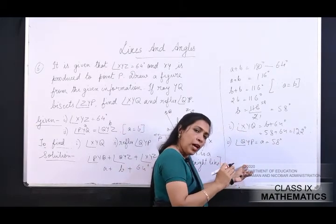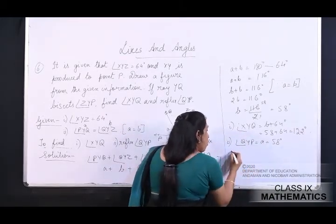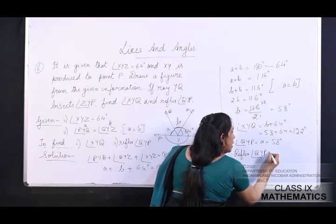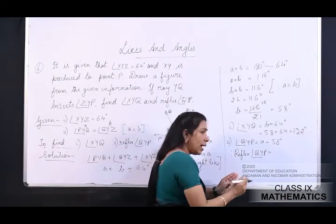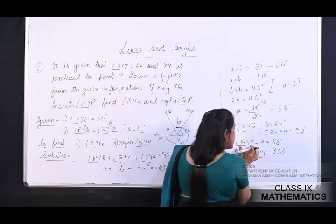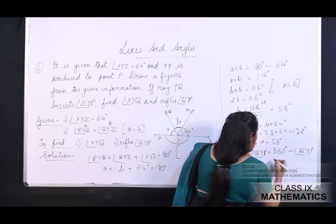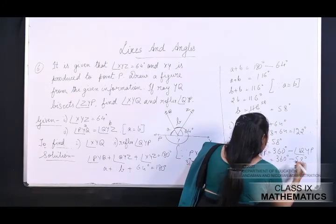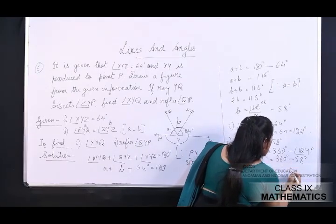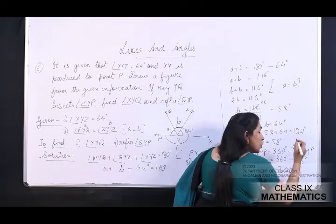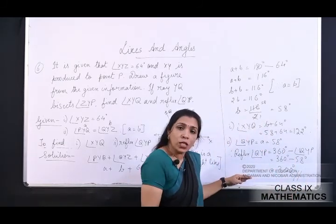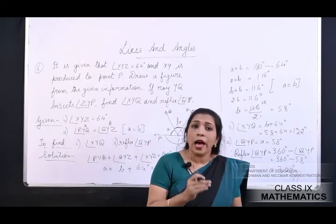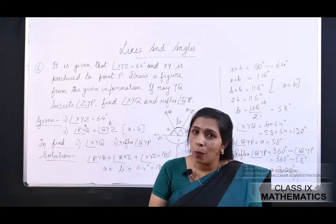Angle XYQ equals B plus 64 equals 58 plus 64 equals 122 degree. For reflex angle QYP: it equals 360 minus angle QYP equals 360 minus 58 equals 302 degree. I hope this question is clear. With this I have completed Exercise 6.1 — continuation will be done in the next class. Till then stay safe.